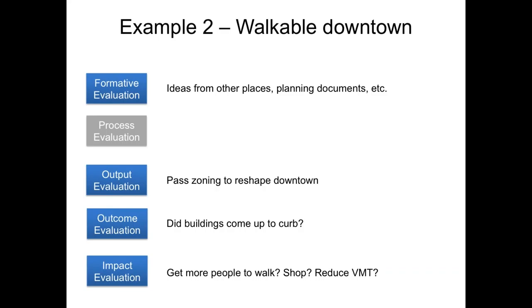In terms of creating a walkable downtown, a formative evaluation might happen during the comprehensive planning process — getting ideas from other places. The output might be: did we pass the zoning to reshape our downtown? Often our evaluation stops there. Success is measured as 'yes, we passed the zoning.' But we never go back to ask: did the buildings come up to the curb? Are we putting in the street furniture we need? Is the change actually happening? And ultimately, are more people walking? Are more people shopping? Are we reducing vehicle miles traveled? You can see the different kinds of evaluations that are possible.